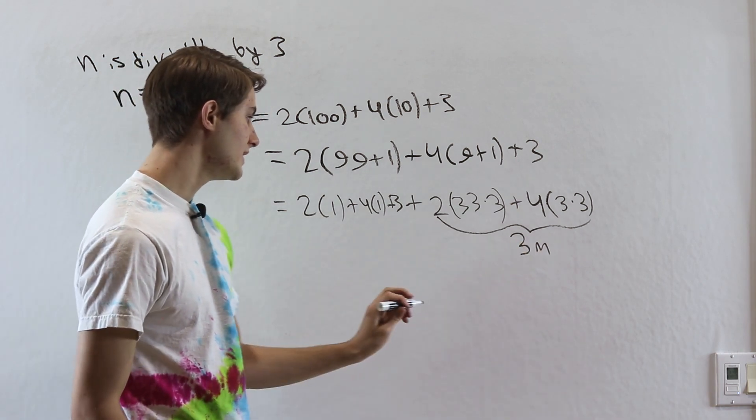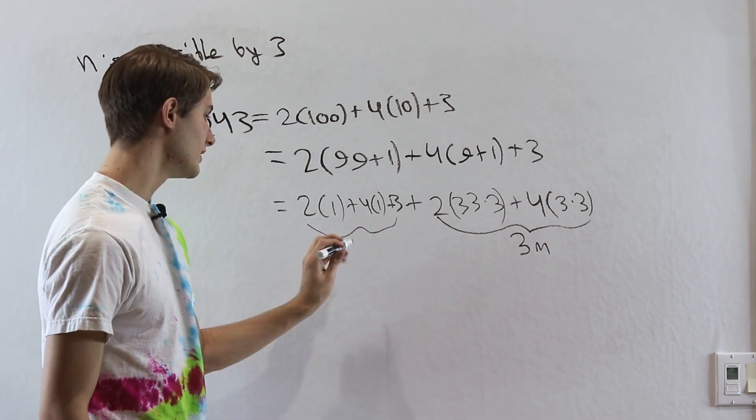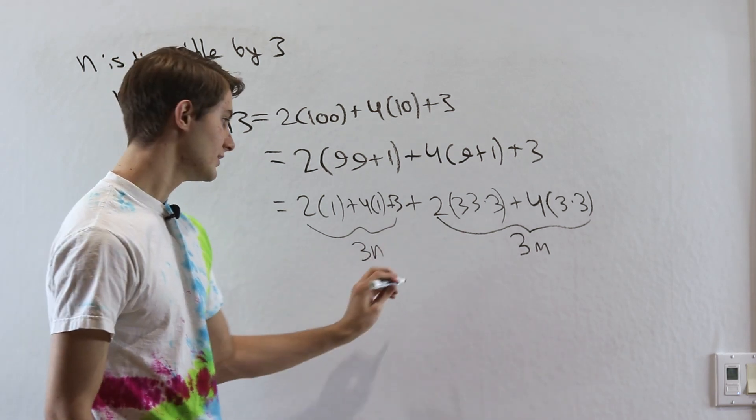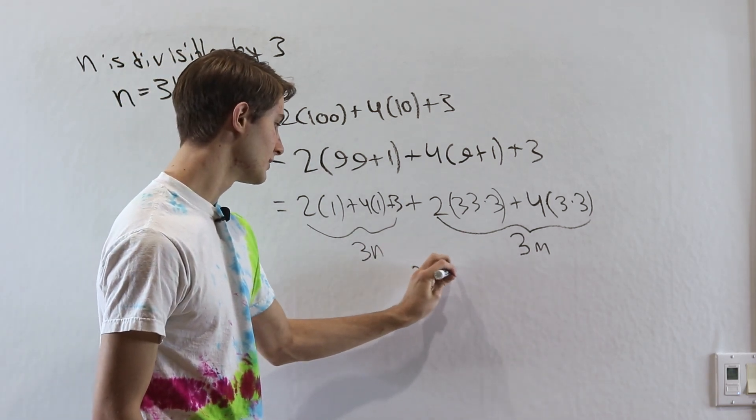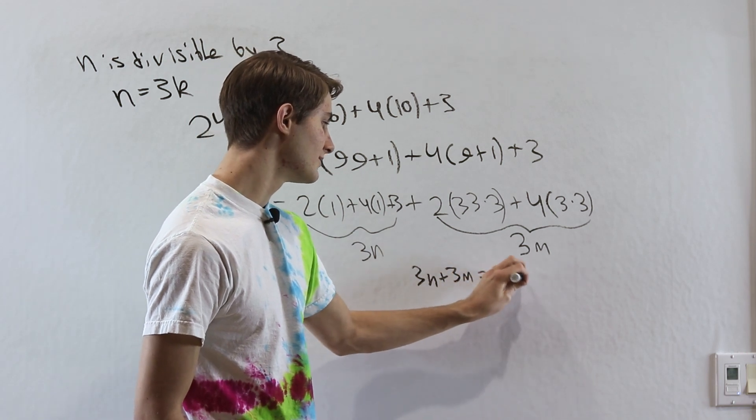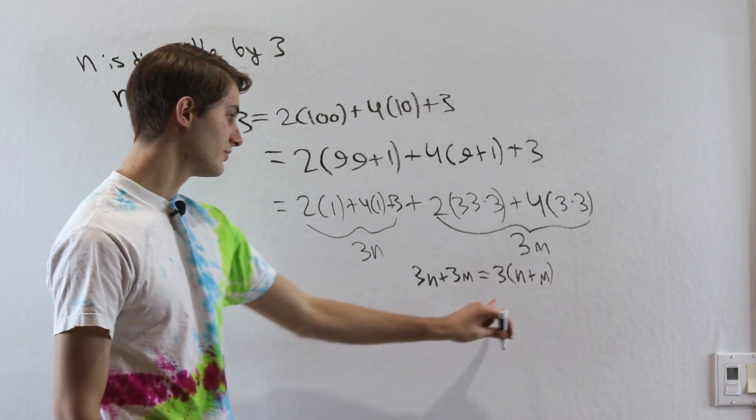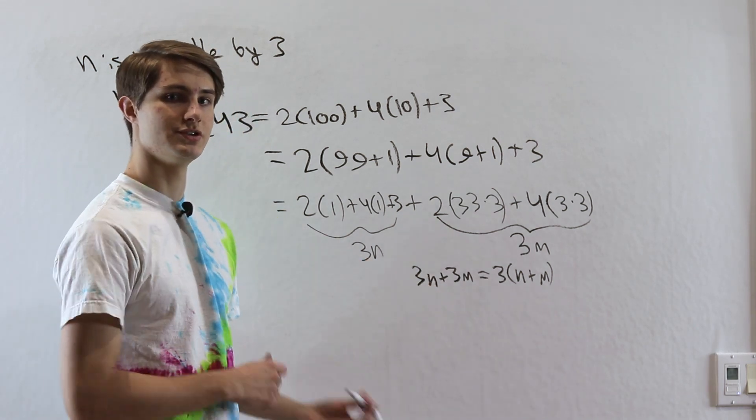Because if we take 3m, and then maybe this part is equal to 3 times n, if we add those together, 3n plus 3m is the same as 3 times n plus m. n plus m is still a whole number, and so we've proved that our result is divisible by 3.